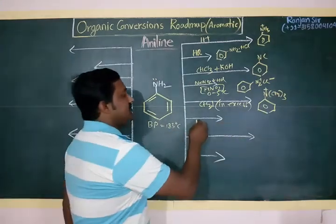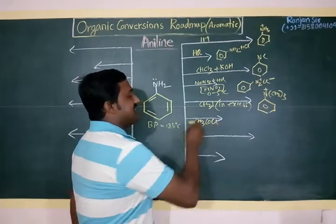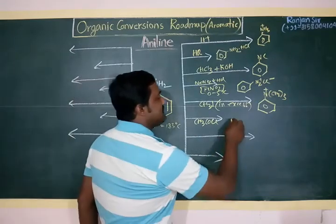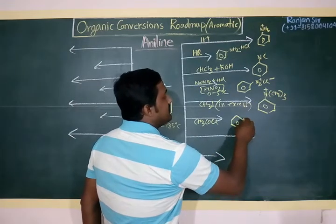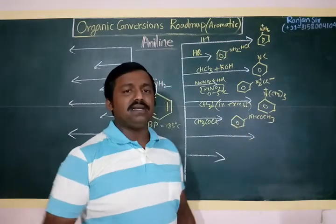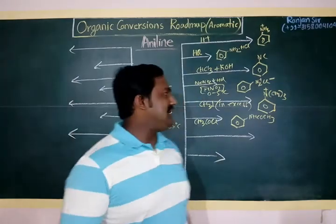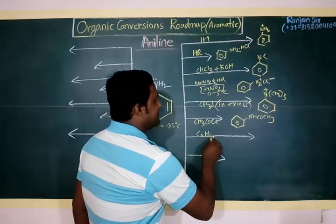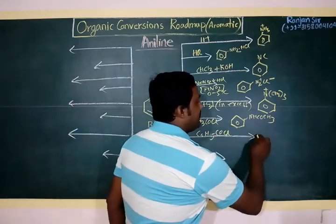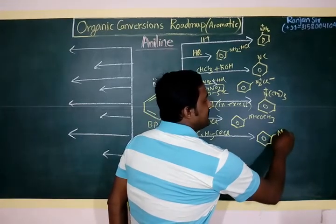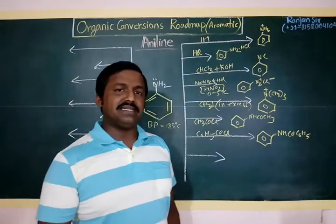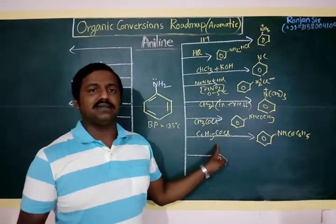Aniline can react with acetyl chloride (CH3COCl) or acetic anhydride to produce the compound NHCOCH3, known as acetanilide. Aniline also reacts with benzoyl chloride (C6H5COCl) to form a similar product — NHCOC6H5 — called benzanilide. This reaction is known as the Schotten-Baumann reaction.